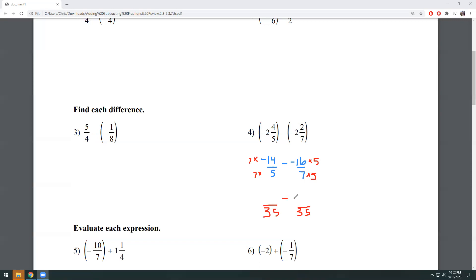I'm going to keep my subtraction and both of my negatives. And now I'm going to figure out my new numerators. So I've got seven times 14, which is going to give me a 98. And I have 16 times five, which gives me an 80.